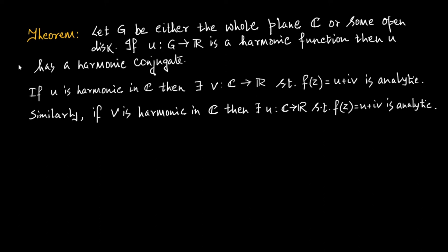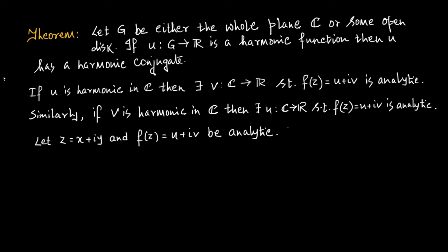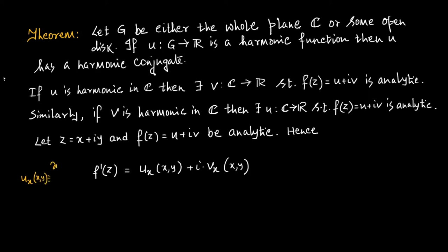The method is known as the Milne-Thompson method. Let z = x + iy and f(z) = u + iv be analytic. Then from our discussion on analytic functions, we can write that the derivative f'(z) will be equal to u_x at the point (x, y) plus i times v_x at the point (x, y), where u_x means ∂u/∂x and v_x means ∂v/∂x.